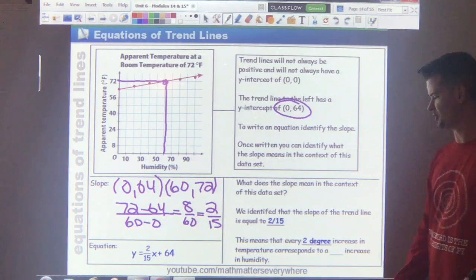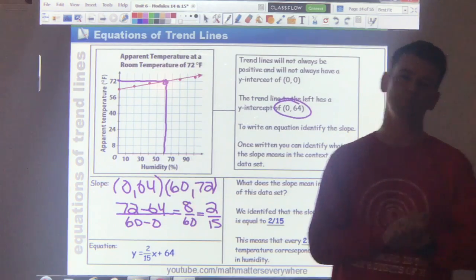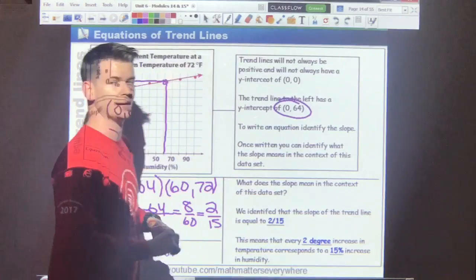Which means that for every 2 degree increase in temperature corresponds to a 15% increase in humidity. That's the scatter plot. Thank you for tuning in. See you next time. Goodbye.